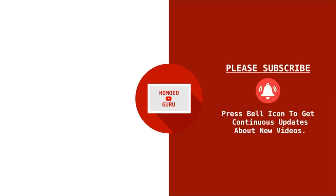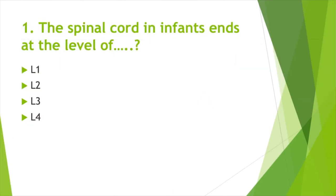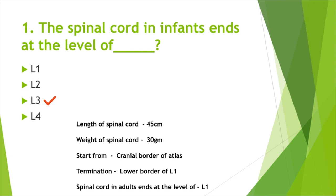Please subscribe to our channel and press the bell icon to get continuous updates. Thank you. First question: the spinal cord in infants ends at the level of — Option A: L1, Option B: L2, Option C: L3, Option D: L4. Answer: Option C, L3.